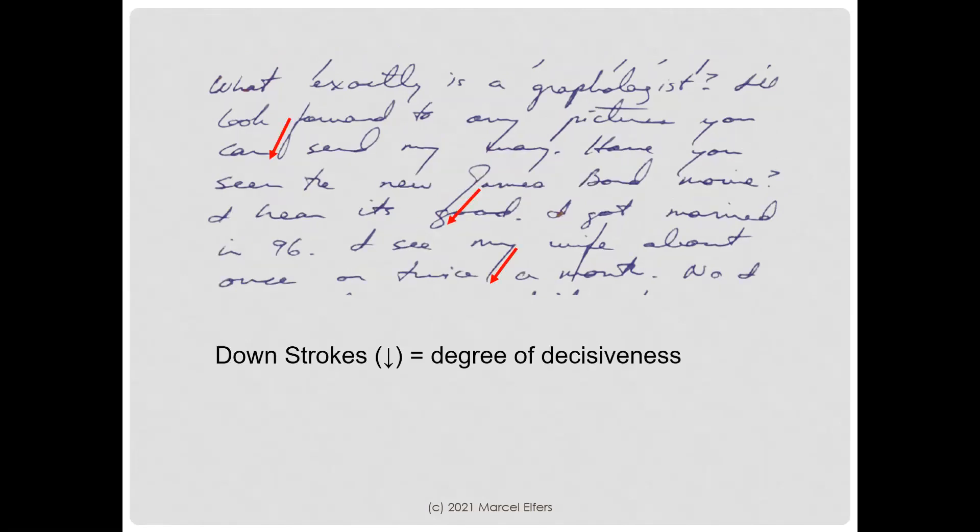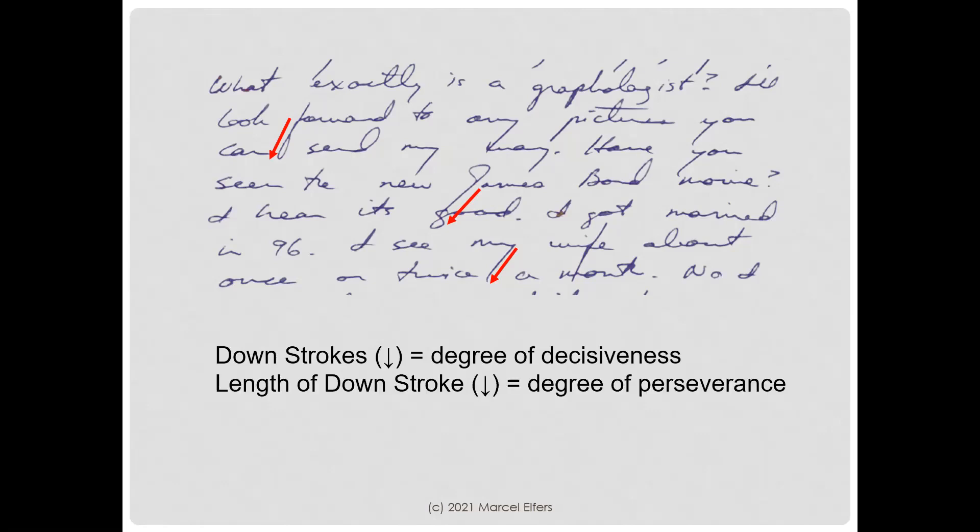Down strokes show the degree of our decisiveness, and this is a very decisive individual. Strong pressure in the down strokes shows confidence in his decision-making processes — extreme decisiveness may be at hand here. The length of the down stroke is the degree of our perseverance. With this long down stroke, this is an individual that may not know when to stop and may not see limitations.